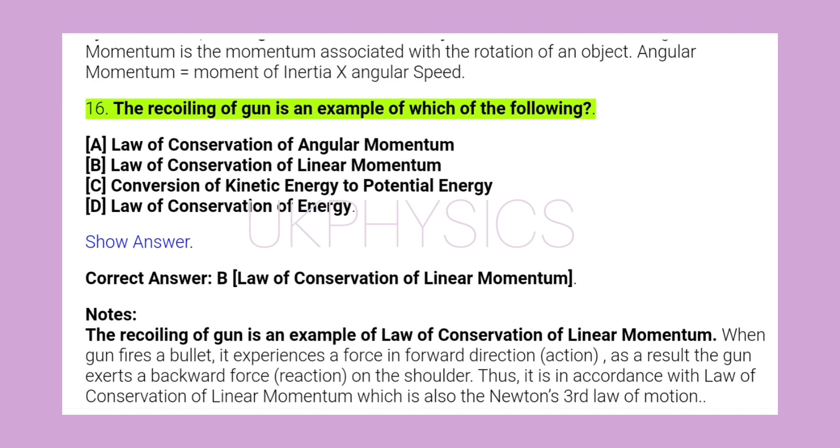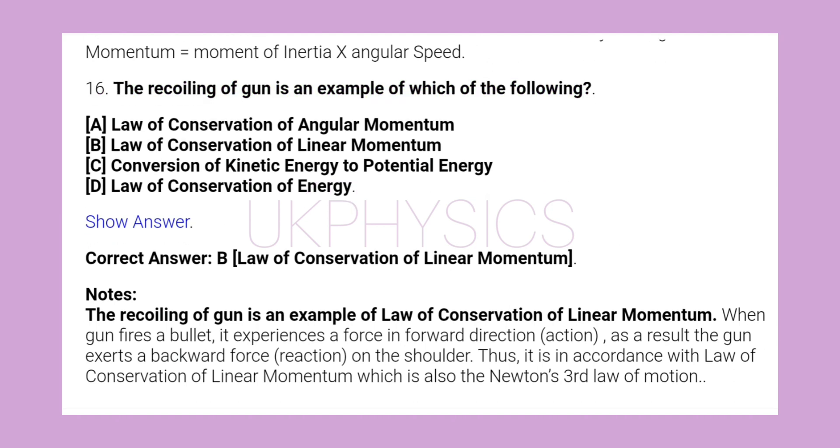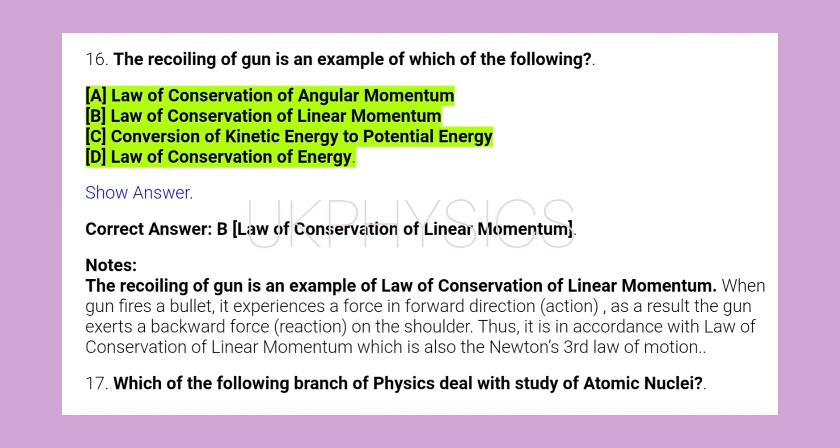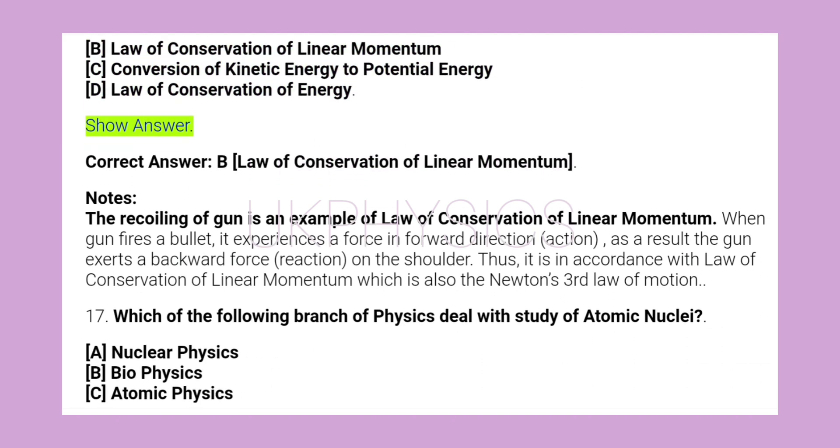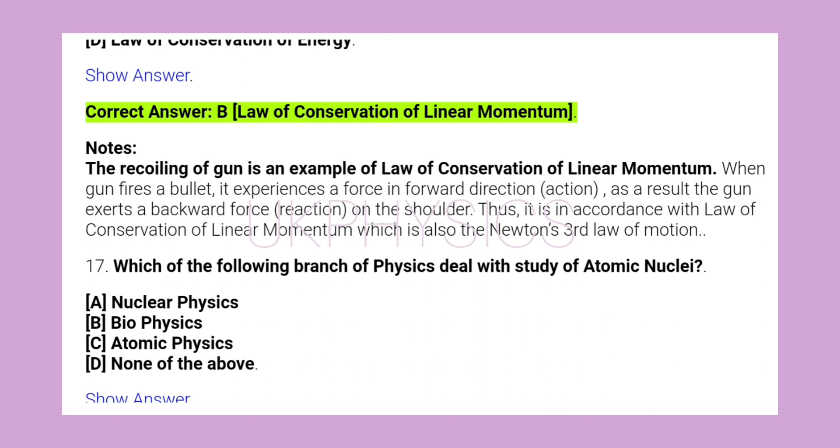16. The recoiling of gun is an example of which of the following? A. Law of conservation of angular momentum, B. Law of conservation of linear momentum, C. Conversion of kinetic energy to potential energy, D. Law of conservation of energy. Correct answer B. Law of conservation of linear momentum.